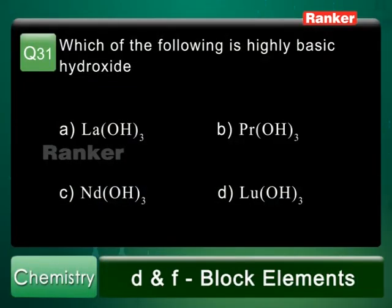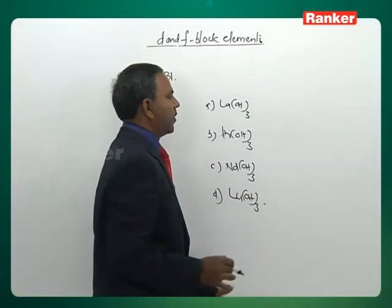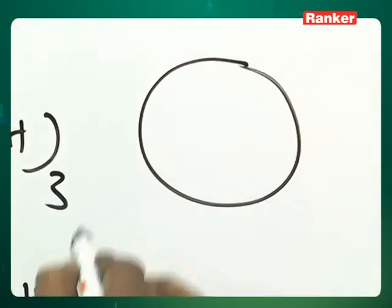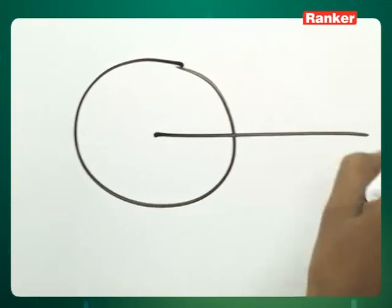Now see the options. Option A is lanthanum hydroxide — La(OH)₃. Option B is praseodymium — Pr(OH)₃. Option C is neodymium — Nd(OH)₃. Option D is lutetium hydroxide. Among these, lanthanum hydroxide has the largest ionic size, so the La–OH bond length is very high.